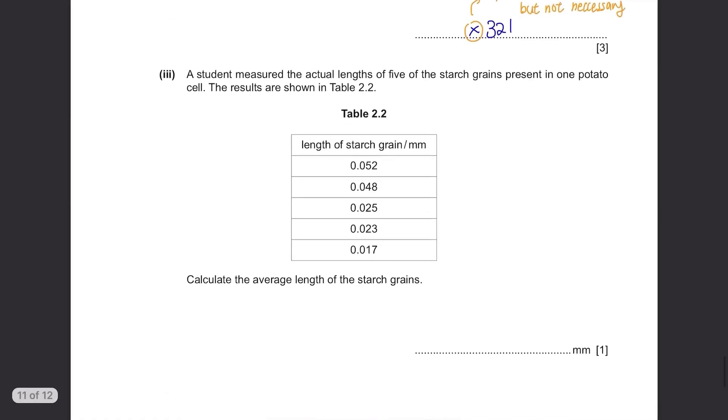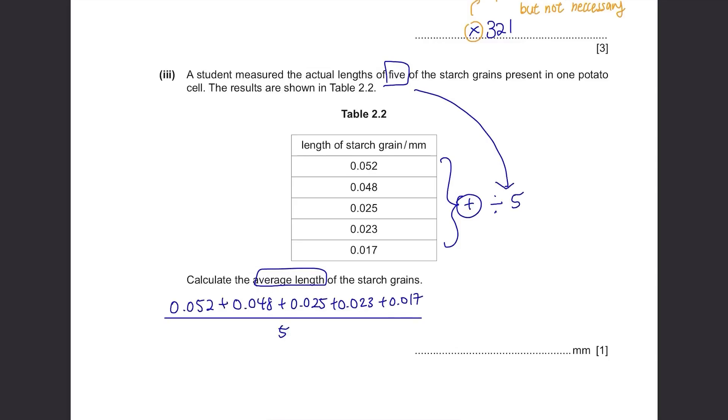Part C(iv): A student measured the actual length of 5 of the starch grains present in one potato cell. The results are shown in table 2.2. Calculate the average length of the starch grains. To calculate the average, add all of them together and divide by the number of lengths given. It's 5. Key in the numbers well in your calculator. Even though it's just one mark, it can make a difference. The answer is 0.033mm.